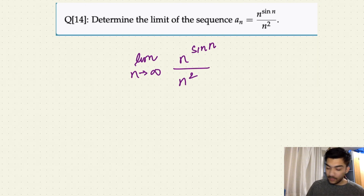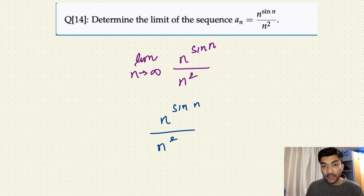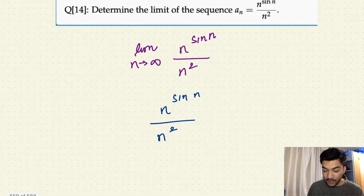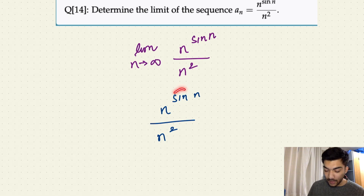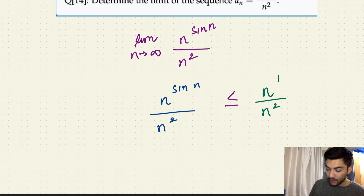So we know that this sequence, n to the power sine n over n squared — since n is positive and always greater than or equal to one (because this is a sequence and we always start with n equals one) — since sine n can take a maximum value of one, this sequence is always less than or equal to n to the power one, over n squared.